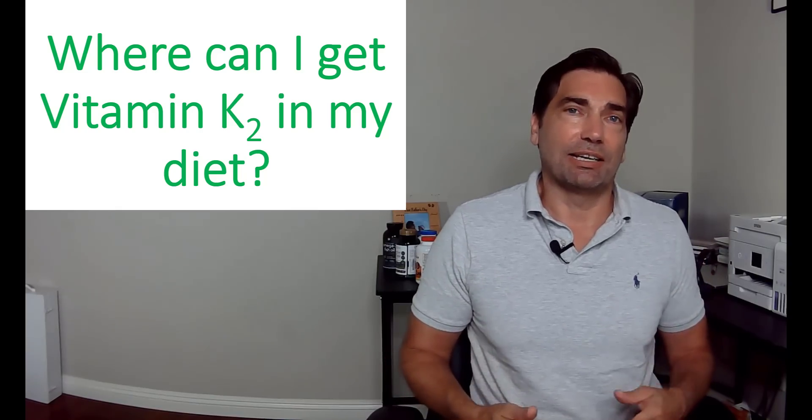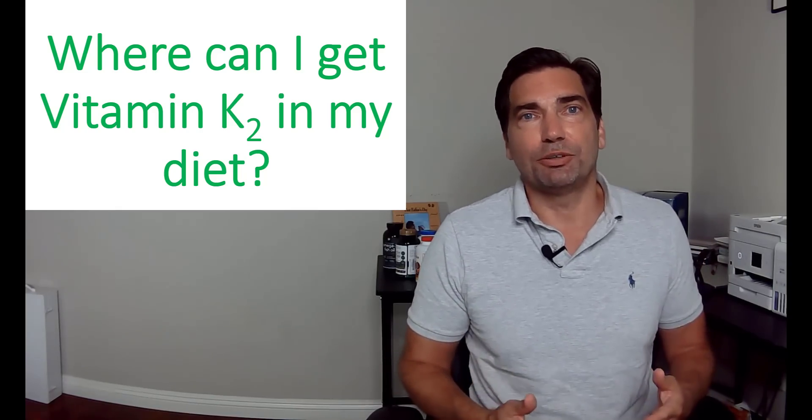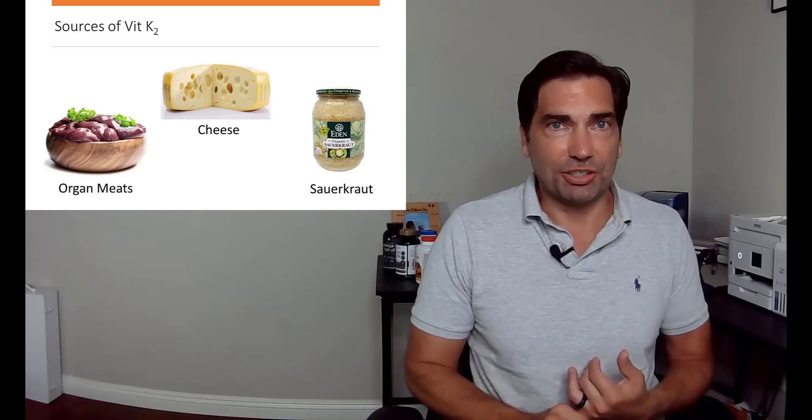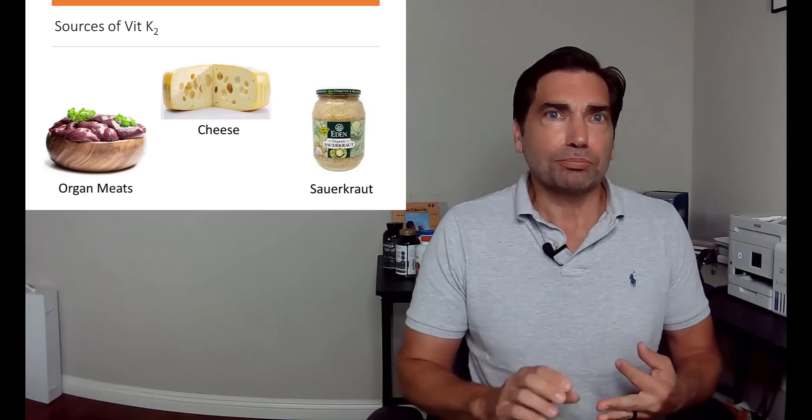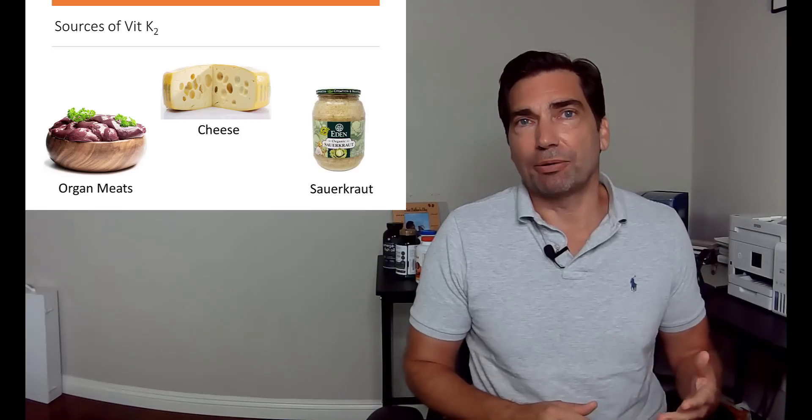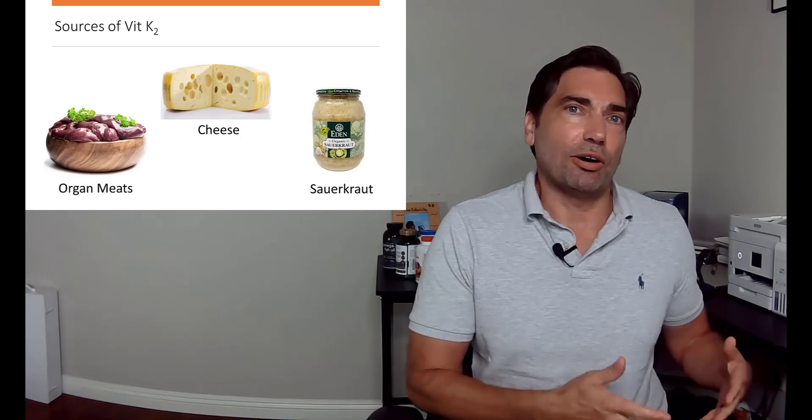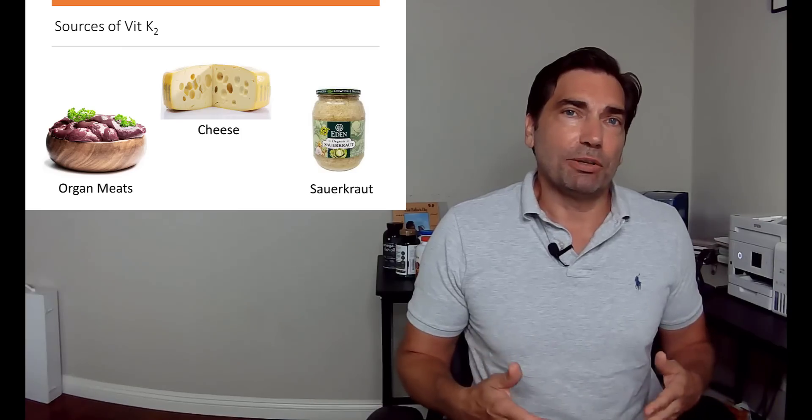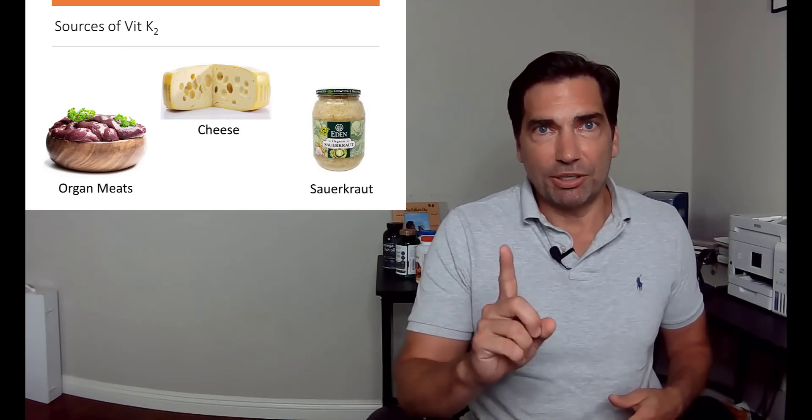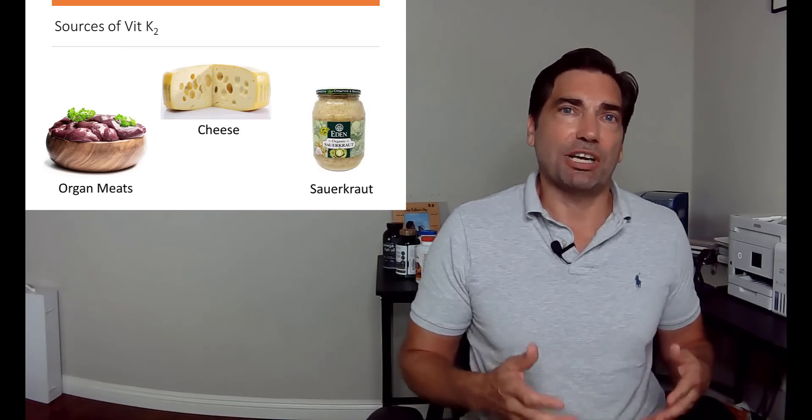You might say, where can I get vitamin K2 in the diet? Unfortunately there's very few places. Some cheeses, especially grass-fed dairy, some fermented foods like sauerkraut, but it's really hard to get from the diet. Where we really want to look for it, there's really one dietary source, and that's a Japanese superfood: fermented soybeans, otherwise known as natto.